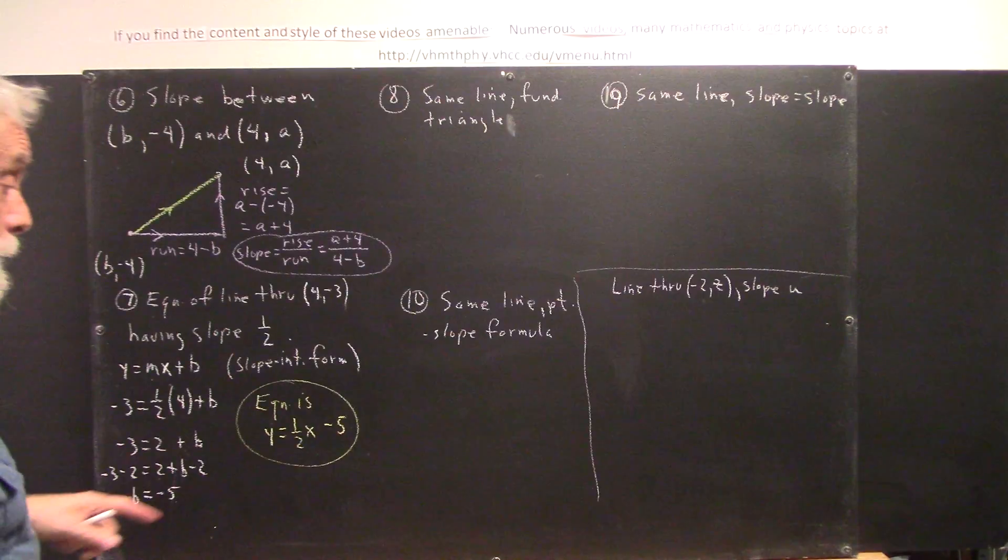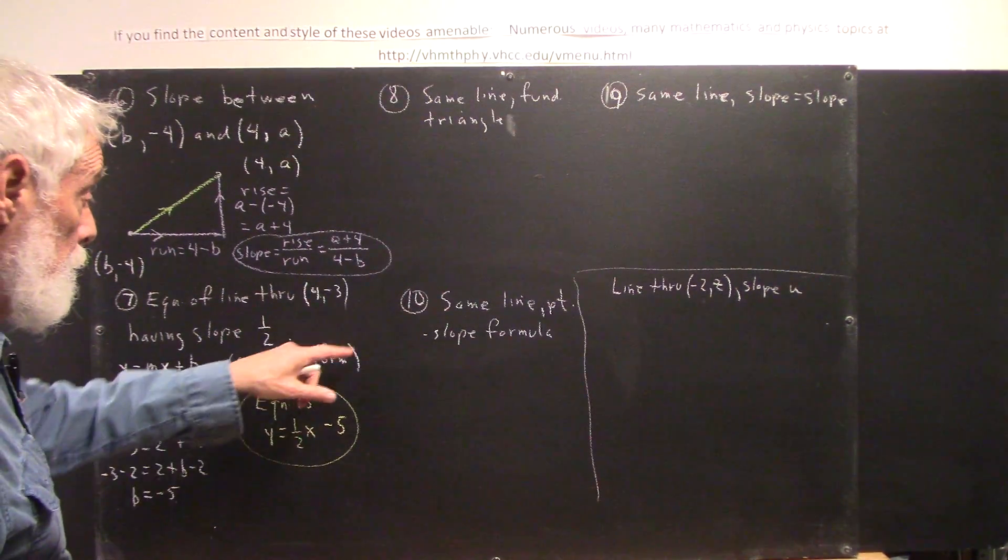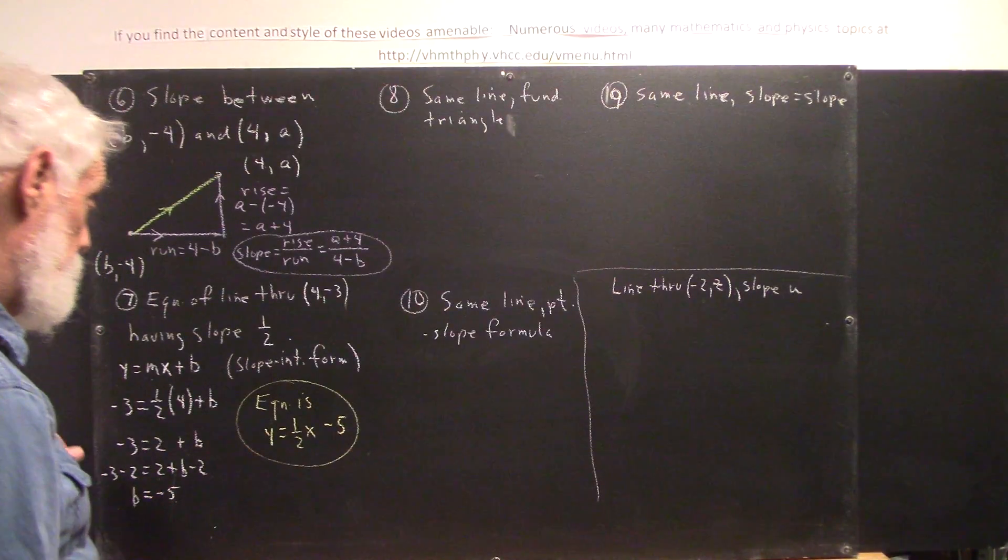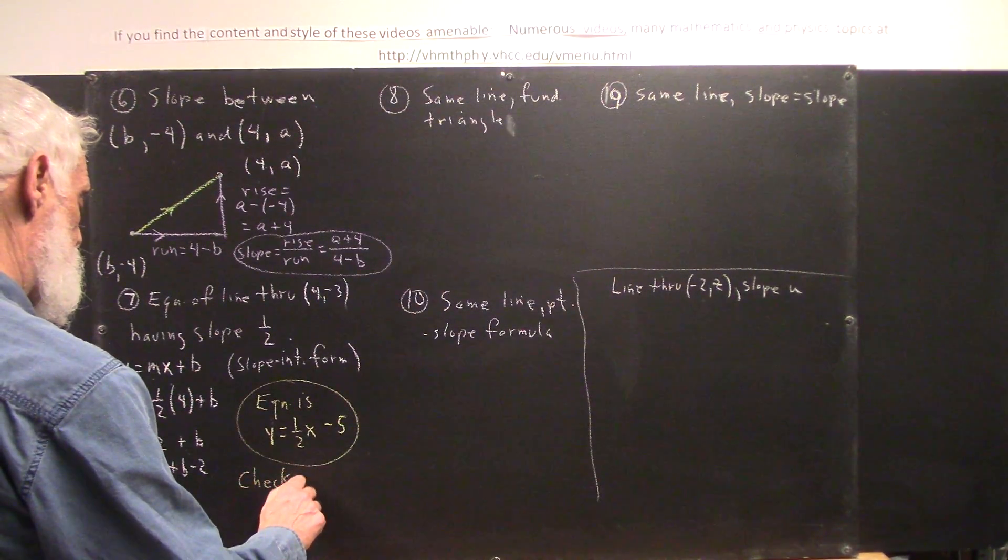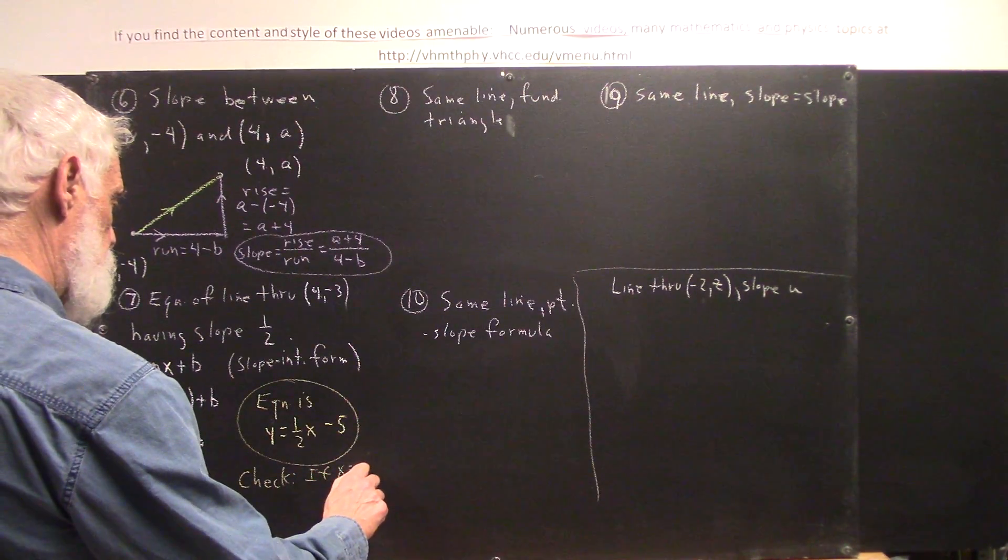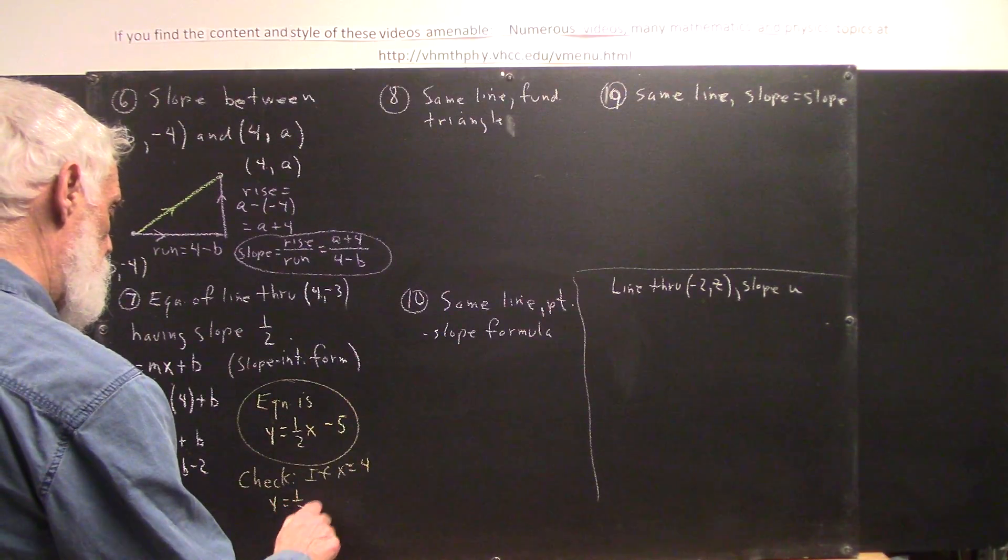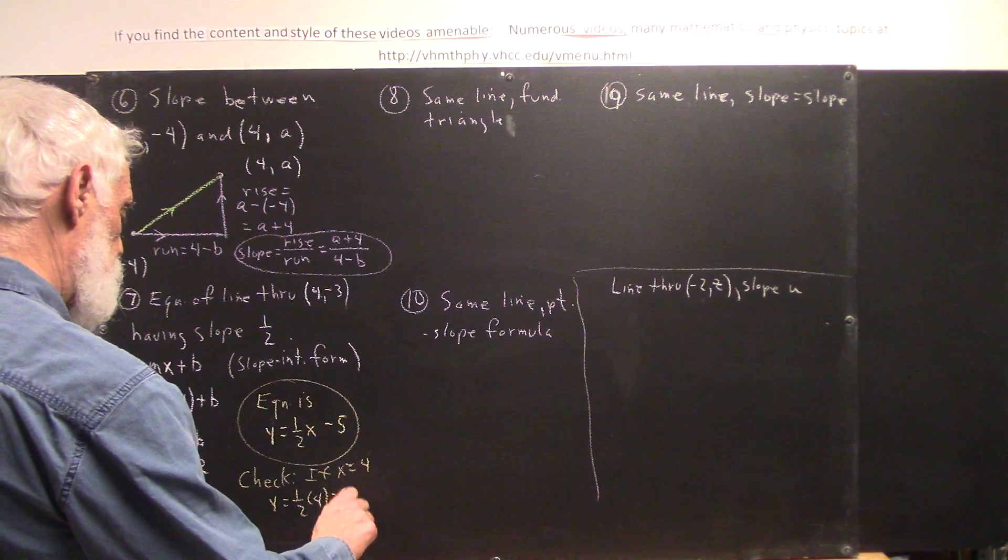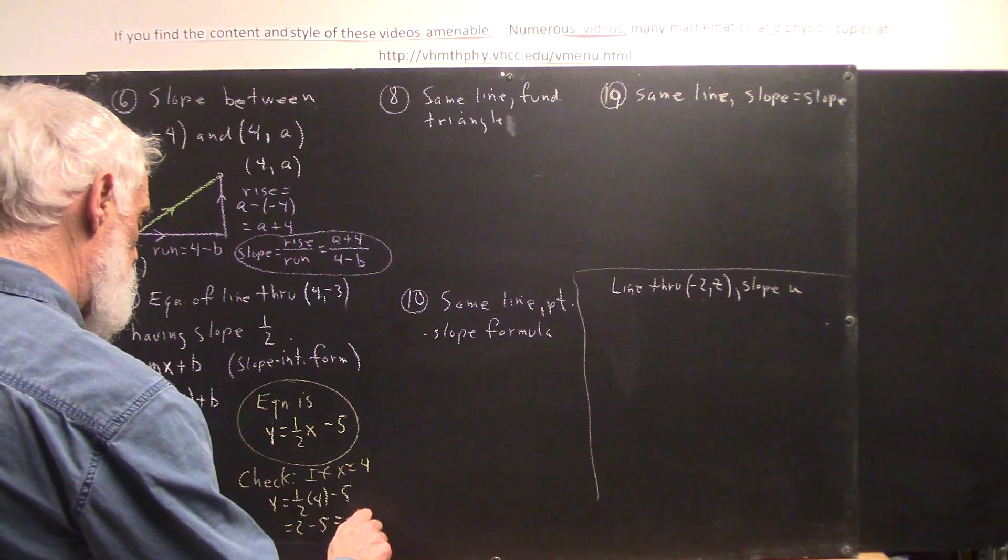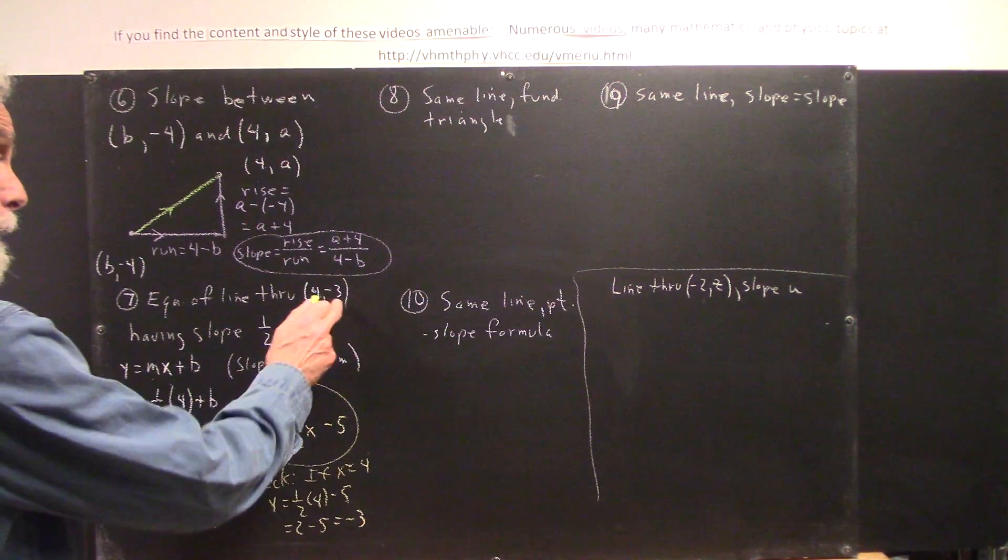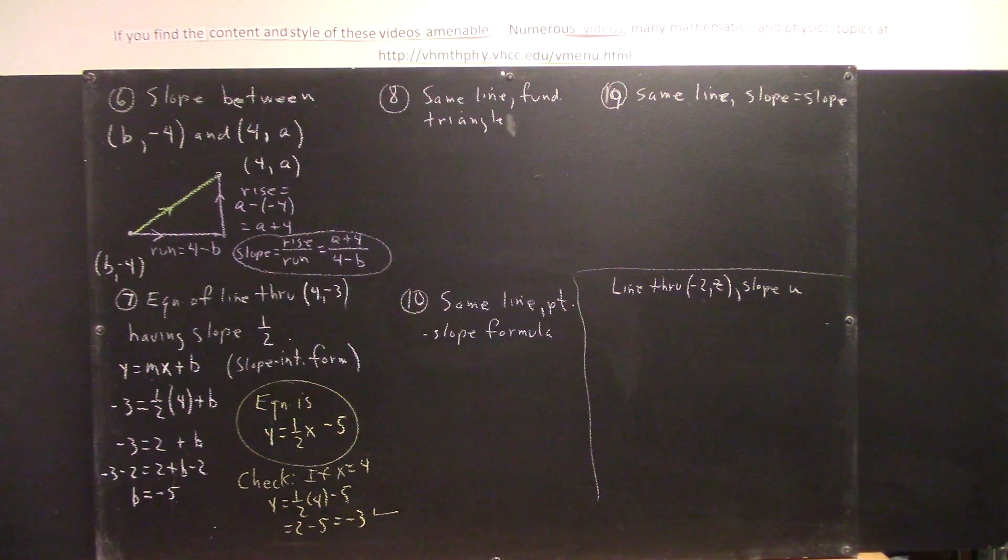We might want to check. Plug in 4 for x and make sure that we get negative 3 for y. Check. If x equals 4, y equals 1 half of 4 minus 5, which is 2 minus 5, which is negative 3, which is what it ought to be. So we can say, okay, we're confident we have the correct equation.